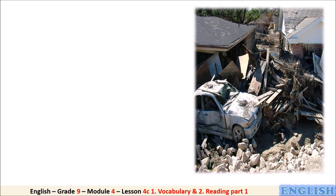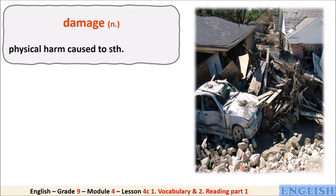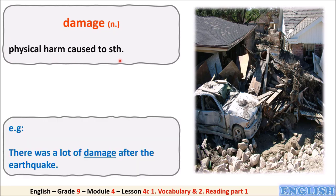We are going to recognize some words related to the reading text. Look at this picture: 'damage' — it is a noun which means physical harm caused to something. For example, there was a lot of damage after the earthquake.